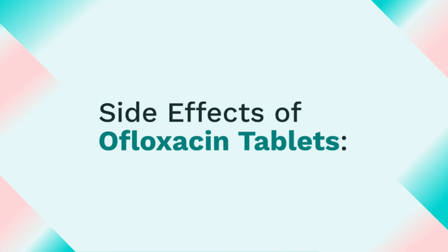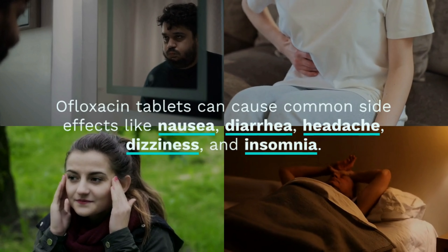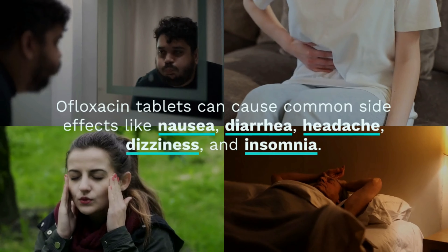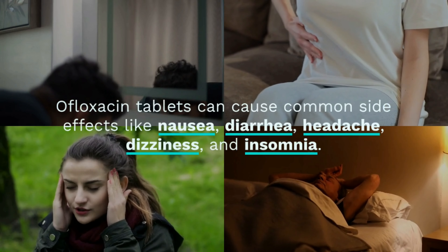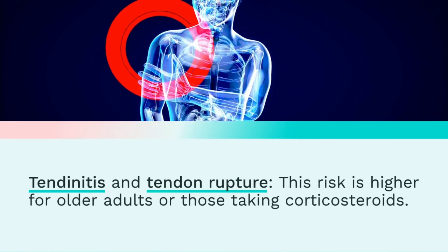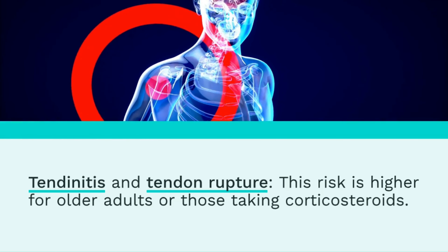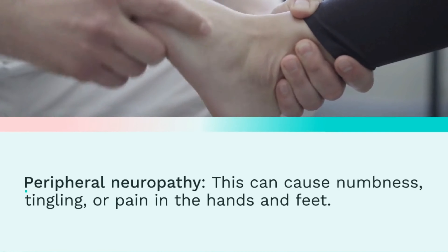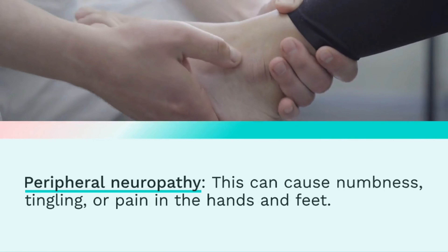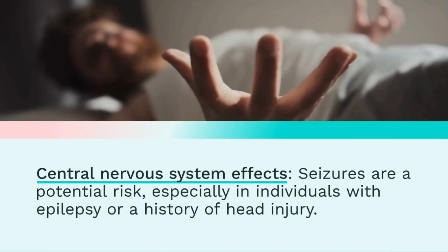Side effects of afloxacin tablets. Afloxacin tablets can cause common side effects like nausea, diarrhea, headache, dizziness, and insomnia. Be aware of more serious side effects, although less common, which include tendonitis and tendon rupture — this risk is higher for older adults or those taking corticosteroids. Peripheral neuropathy can cause numbness, tingling, or pain in the hands and feet.